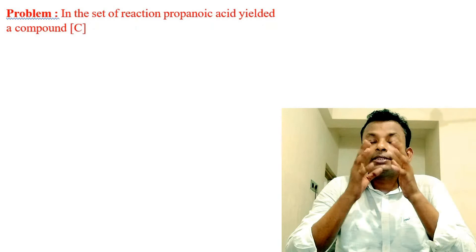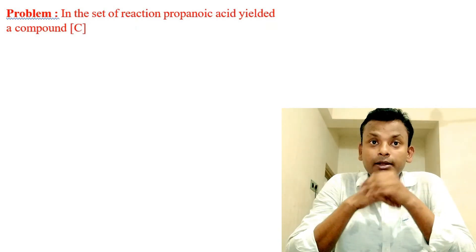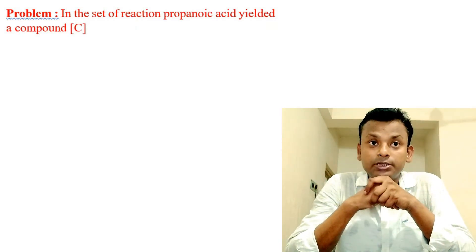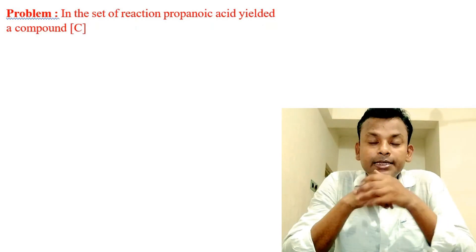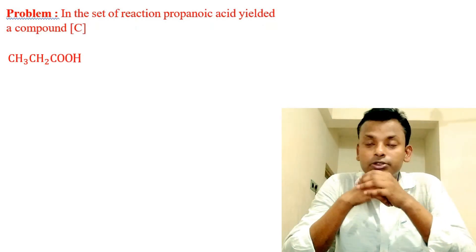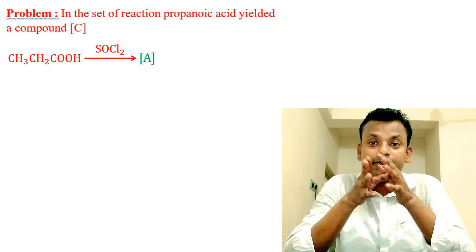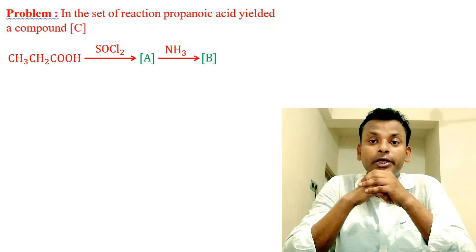Problem: In this set of reactions, propanoic acid yielded a compound C. CH3CH2COOH reacts with SOCl2 gives A, reacts with NH3 gives B, reacts with Br2 and KOH gives ethyl amine.